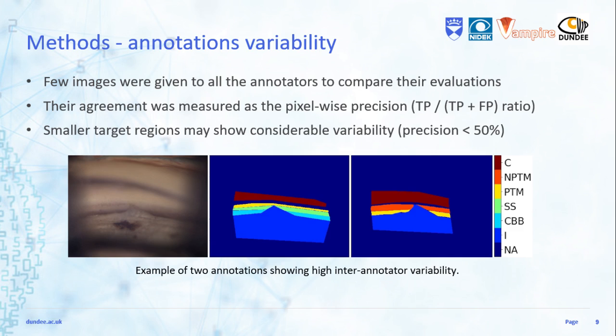While larger regions, like the cornea and the iris, show a good agreement, smaller ones, such as the scleral spur, report sometimes much worse agreement, with precision values that may be less than 50%.